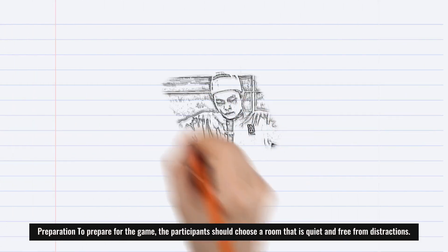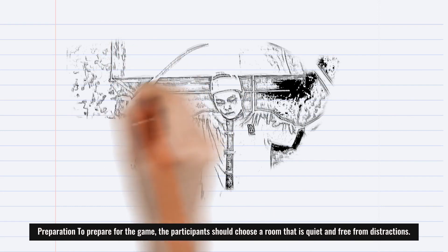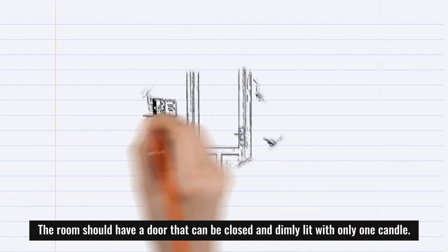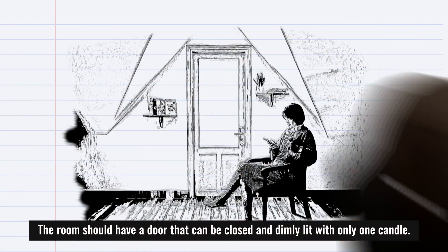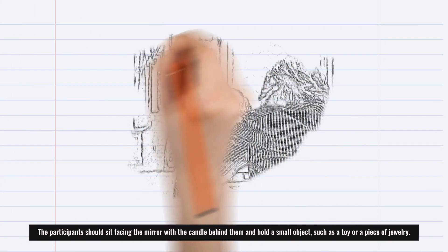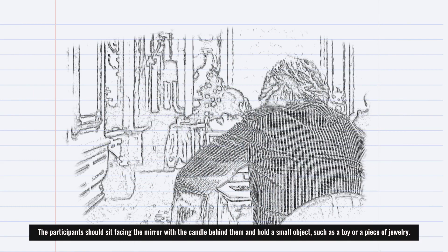To prepare for the game, the participants should choose a room that is quiet and free from distractions. The room should have a door that can be closed and be dimly lit with only one candle. The participants should sit facing the mirror with the candle behind them and hold a small object, such as a toy or a piece of jewelry.